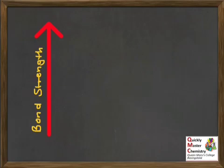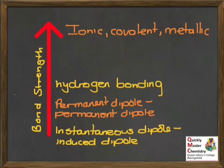You also need to be able to compare the strength of permanent dipole, permanent dipole intermolecular bonds with other forms of bonding. A permanent dipole, permanent dipole intermolecular bond is stronger than an instantaneous dipole, induced dipole intermolecular bond, but weaker than a hydrogen bond. It's important to remember that all these types of intermolecular bond are considerably weaker than ionic, covalent, and metallic bonds.